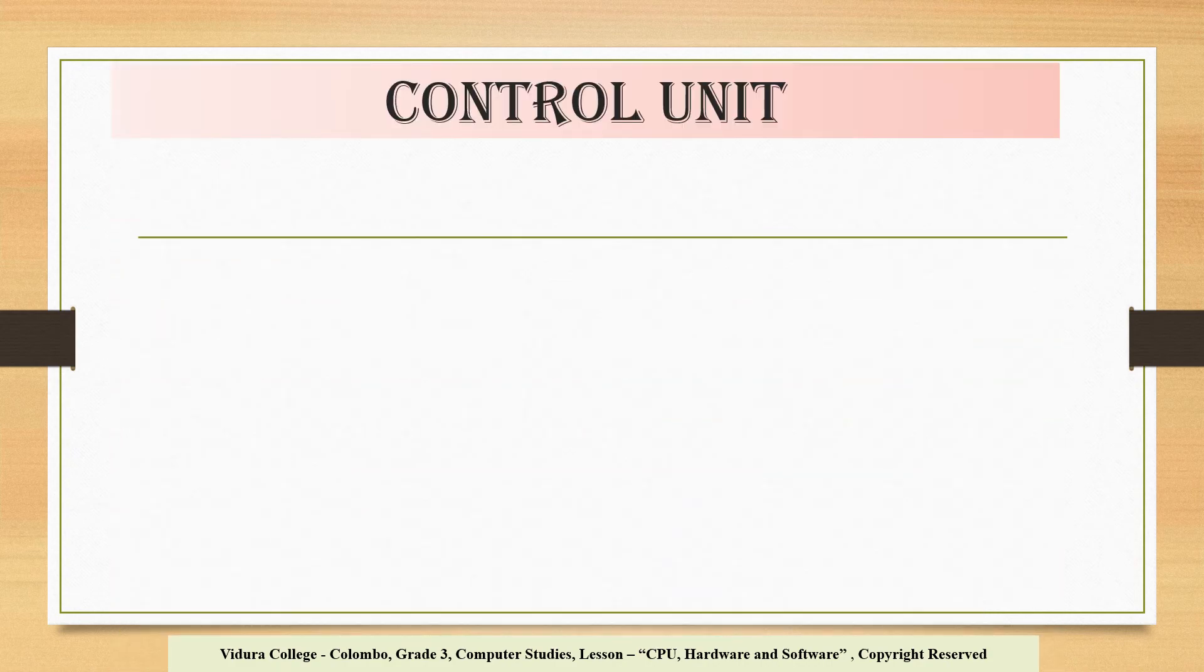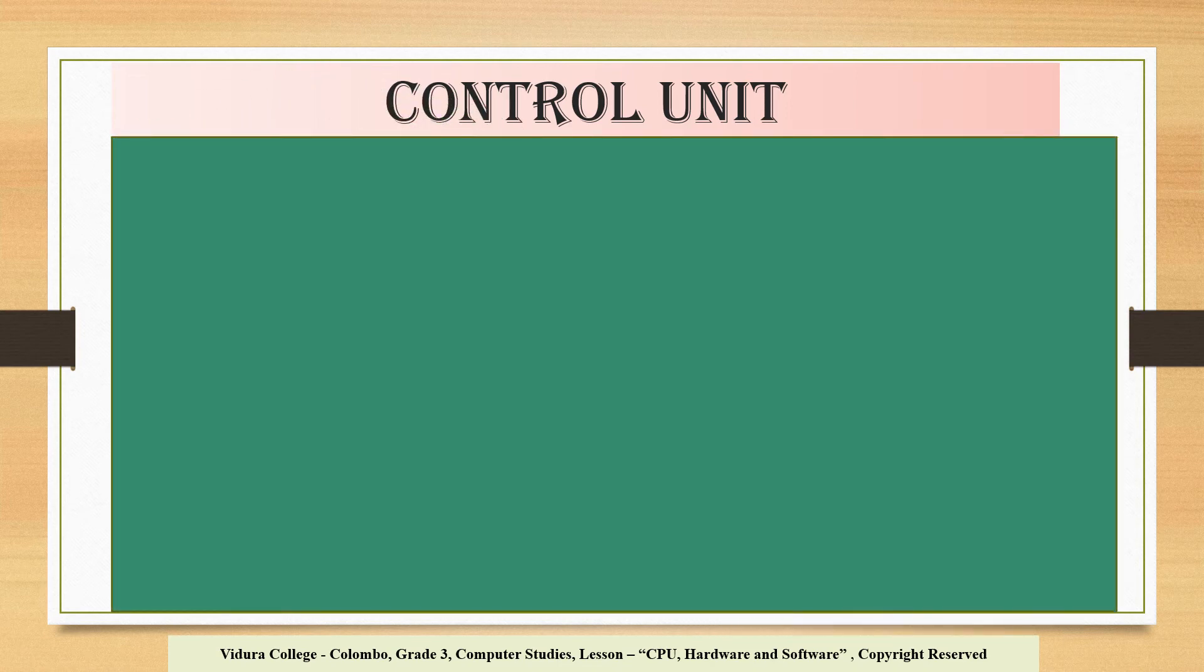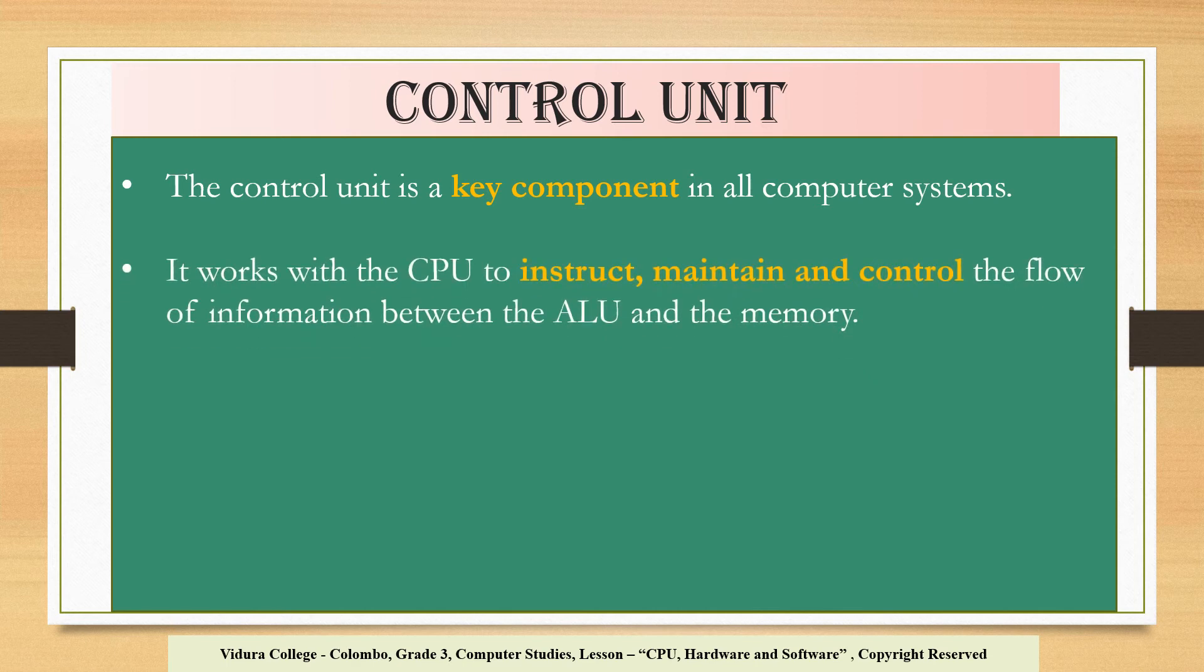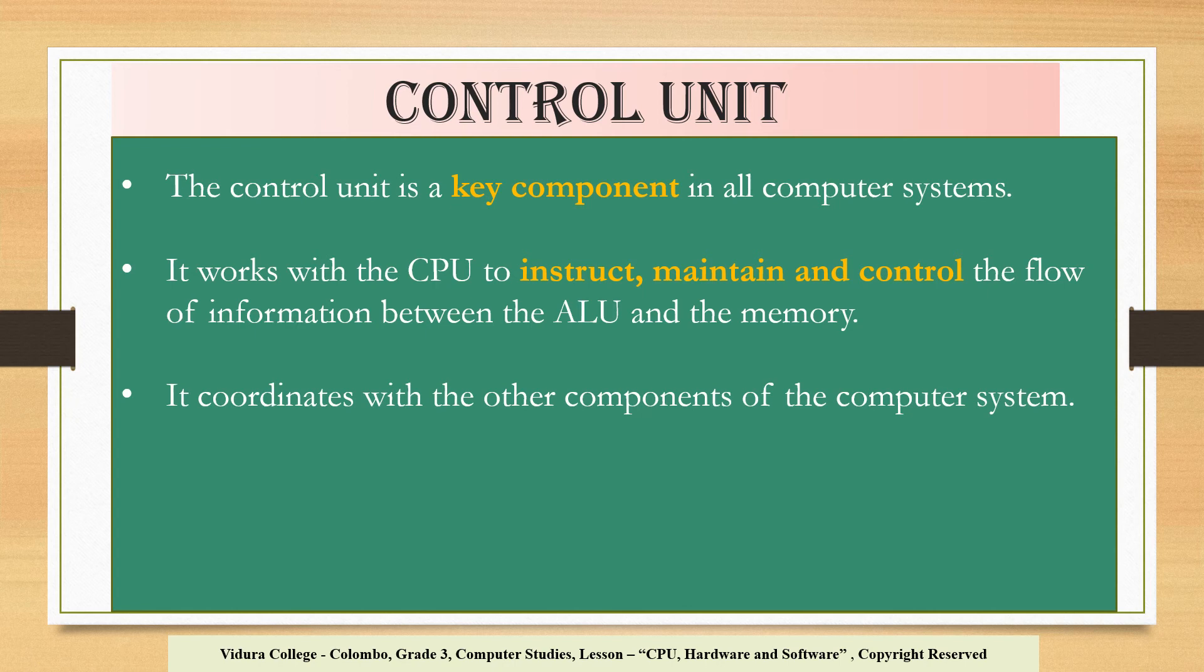Another part of the CPU is control unit. We will learn the function of the control unit now. Do you know, children, we need traffic lines or traffic policemen to avoid traffic jams. They control the movements of vehicles to maintain order. Like that, the control unit works to instruct, maintain, and control the flow of information between the ALU and the memory. And also, it coordinates with the other components of the computer system. Without a control unit, a computer could not follow directions and might not function properly.